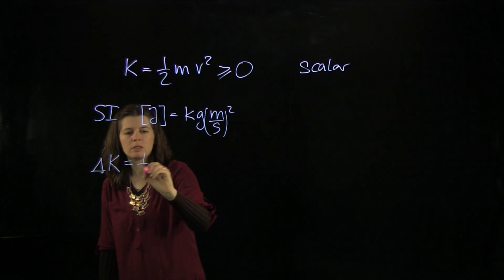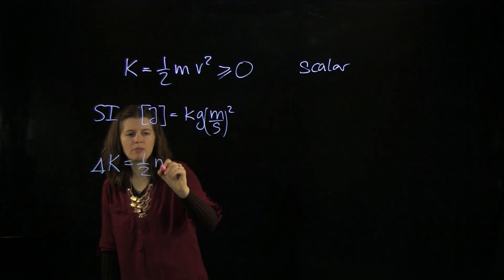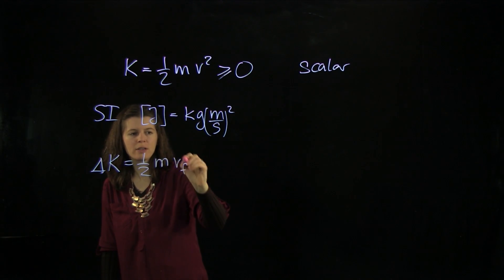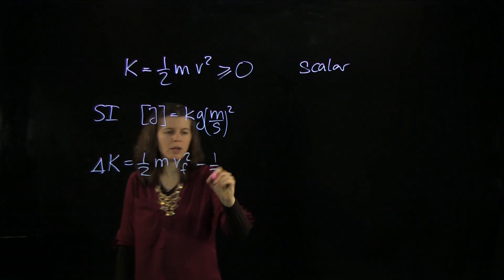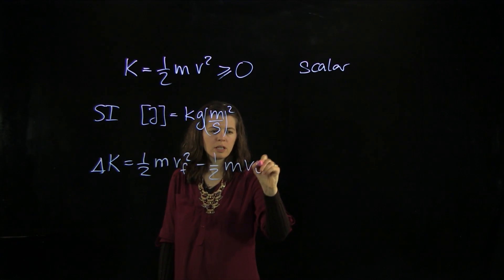And so we'll express this as 1/2 m v_final² minus 1/2 m v_initial².